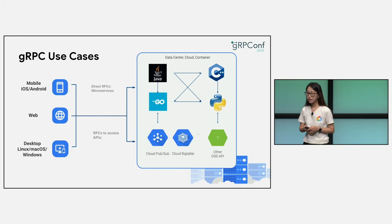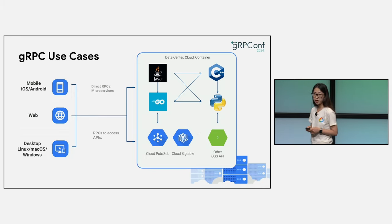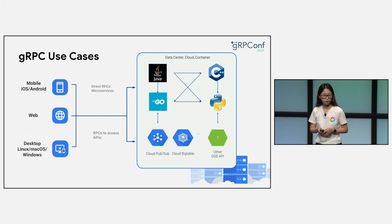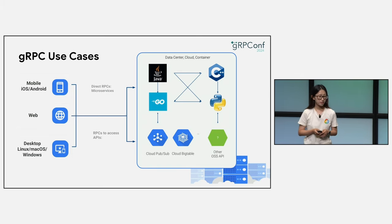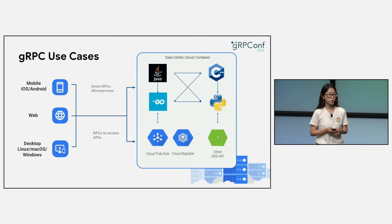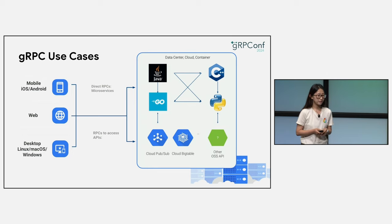gRPC use cases are everywhere. It enables communication between a wide range of devices — from mobile phones, to web browsers, to desktops, and to various backend platforms. This versatility makes it perfect for building microservices and distributed applications, whether on-premise, in the cloud, or in containers.